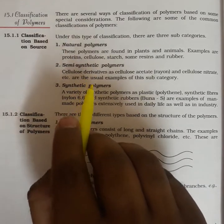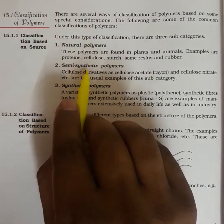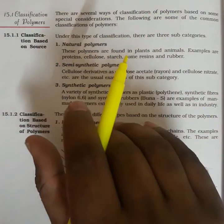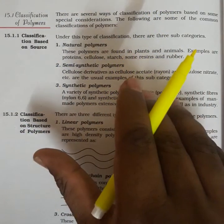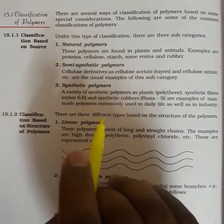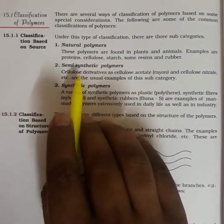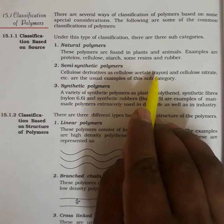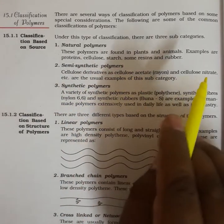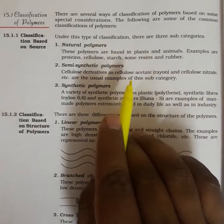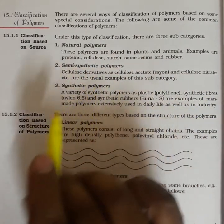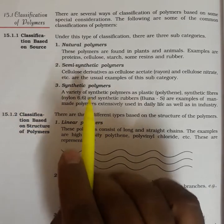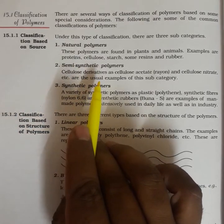Semi-synthetic polymers are obtained from nature but undergo some chemical process. For example, cellulose derivatives undergo acetylation — cellulose acetate and cellulose nitrate are examples of semi-synthetic polymers. Rayon (cellulose acetate) and butyl rubber are also examples of semi-synthetic polymers.